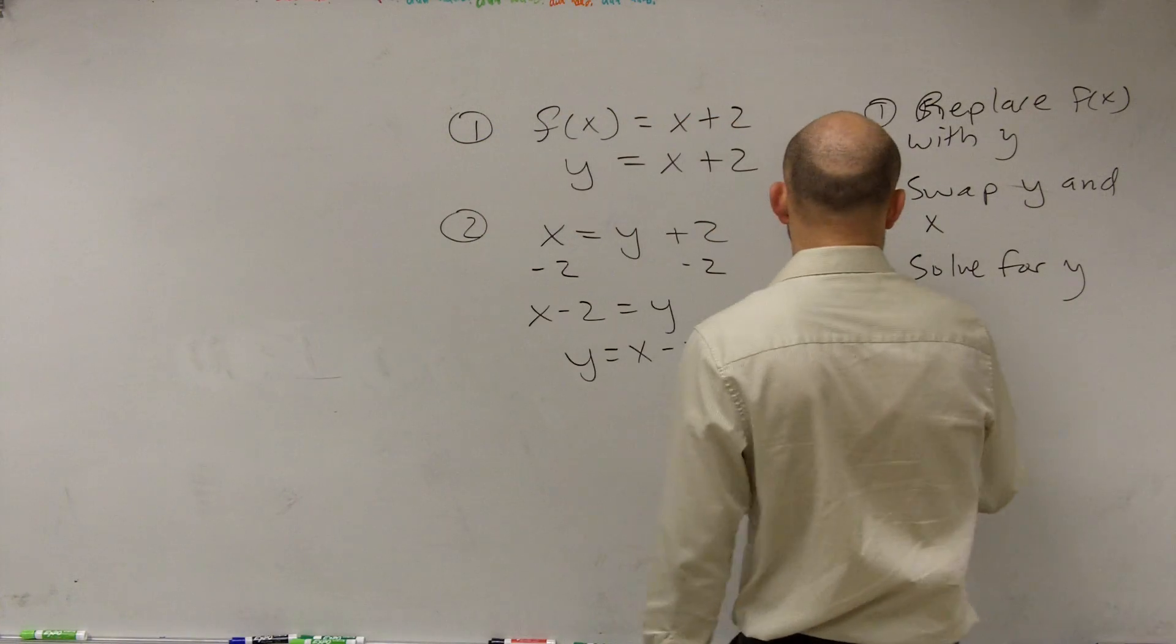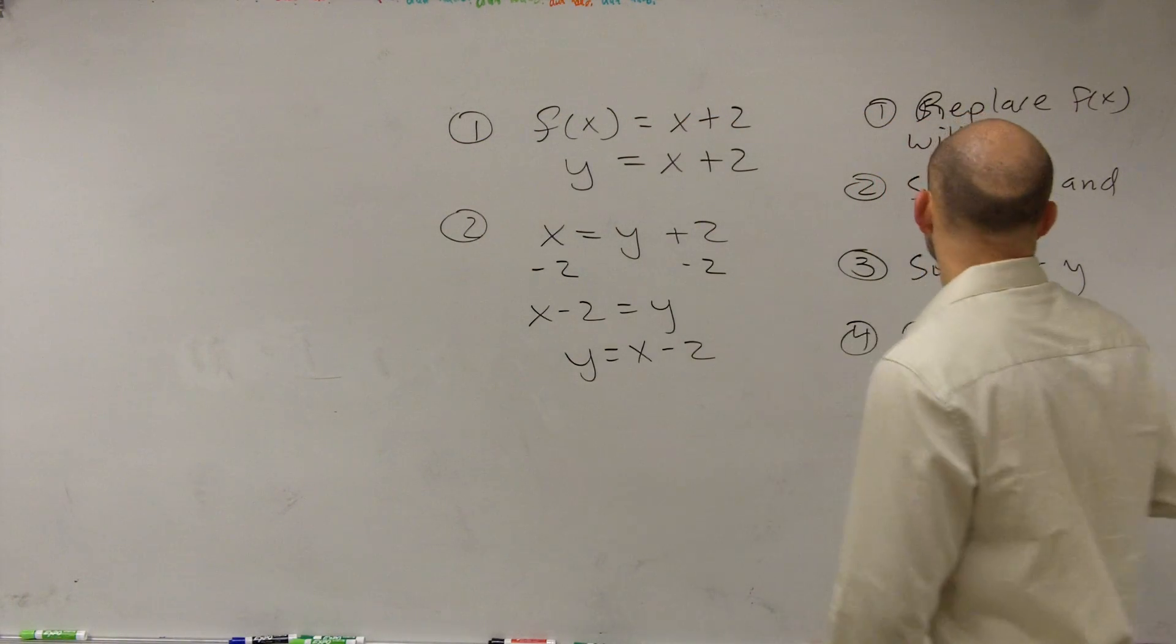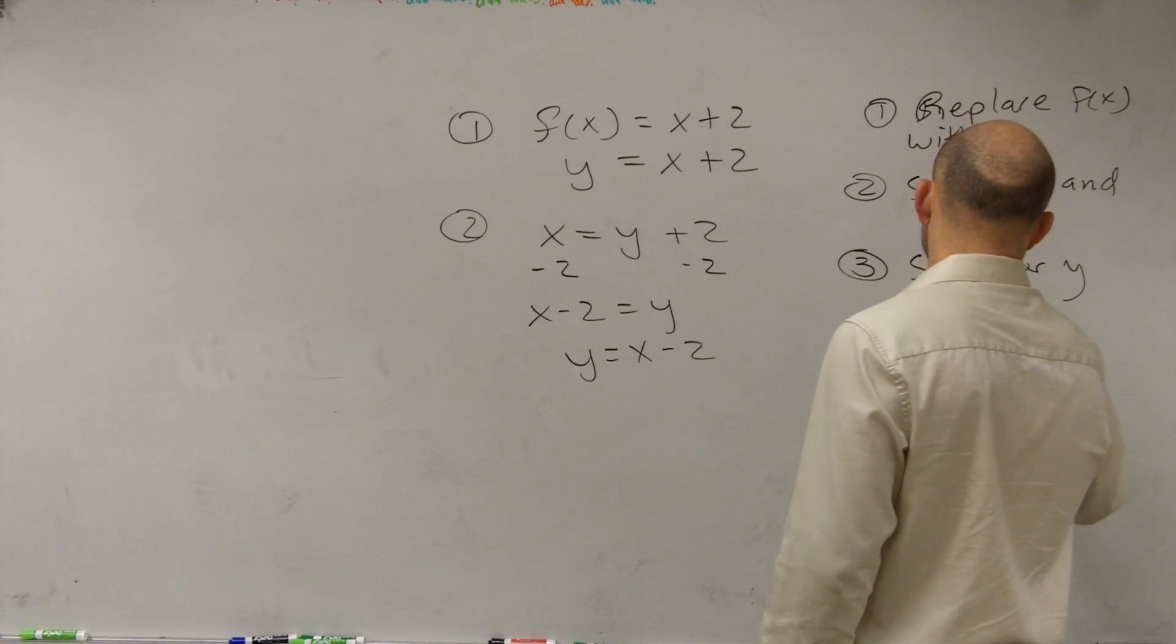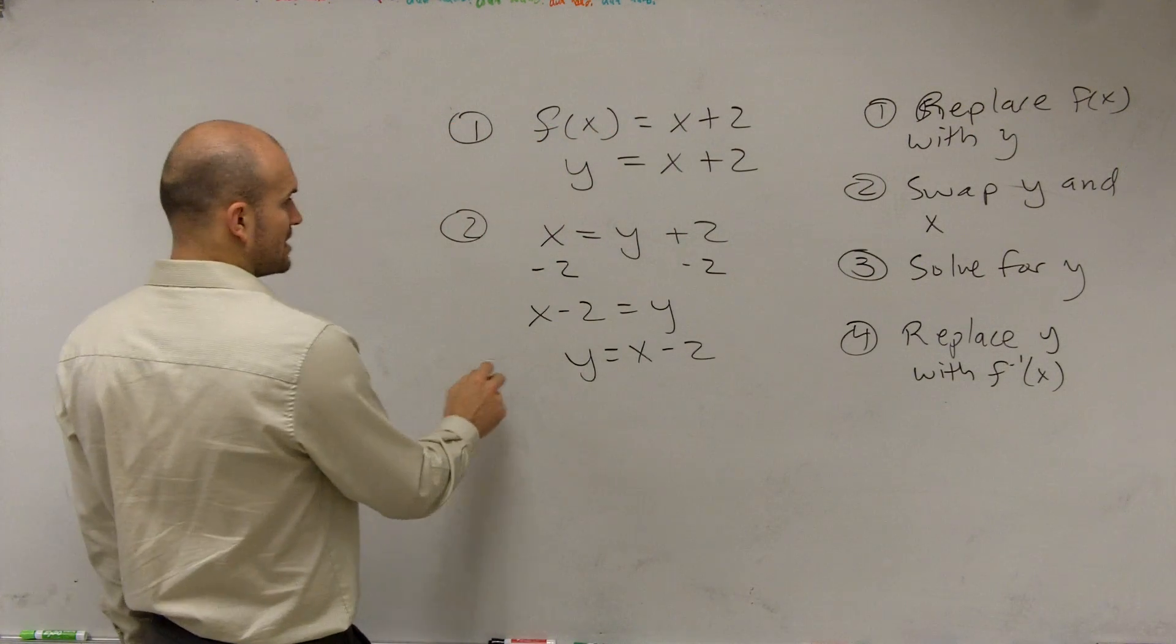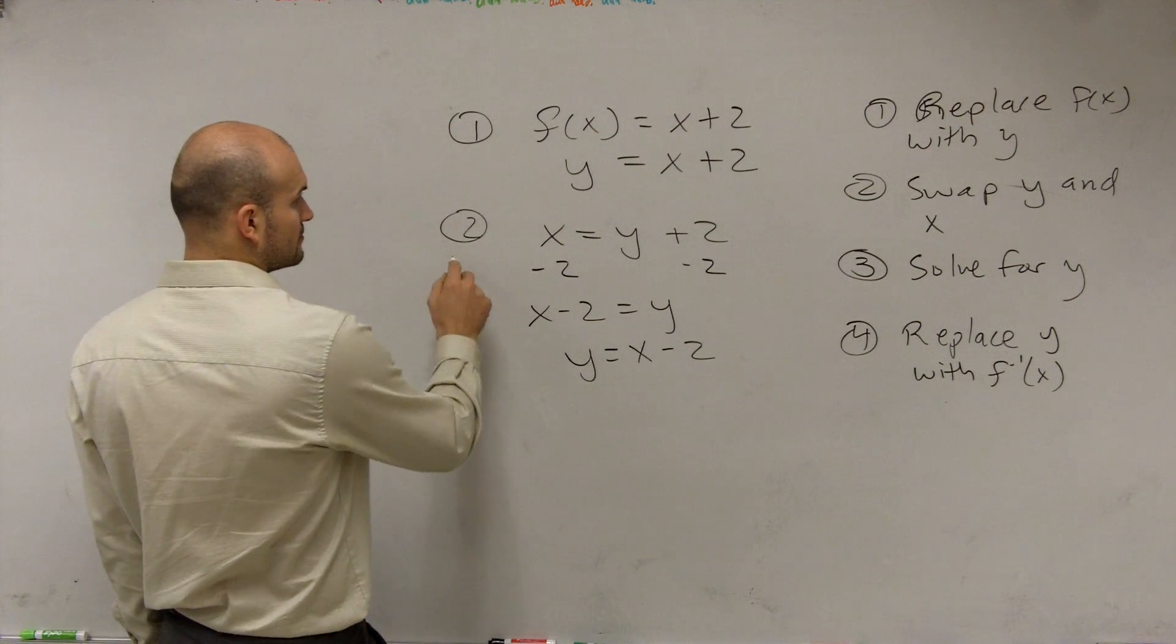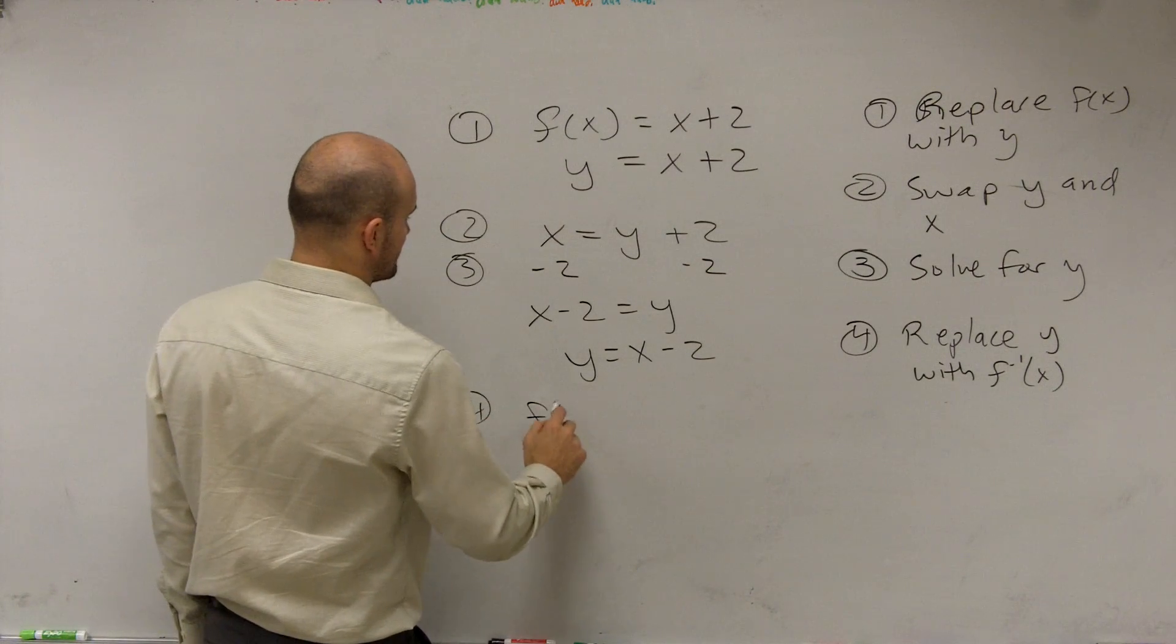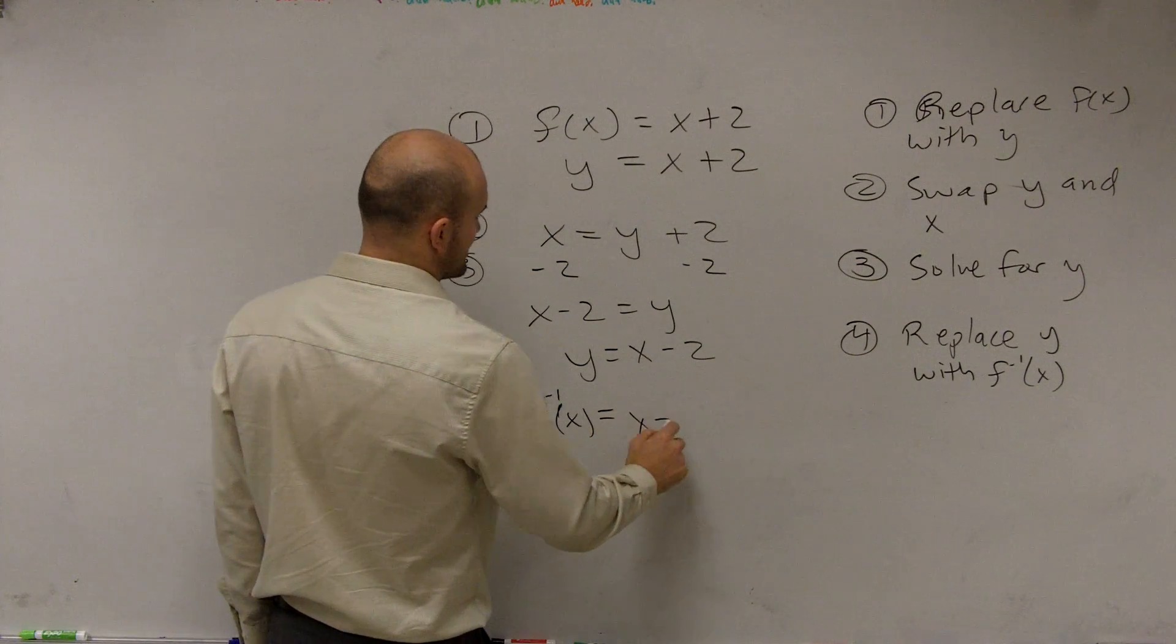Step four: go back to function notation. Replace y with f inverse of x. So that was step three. Then step four, we have f inverse of x equals x minus 2.